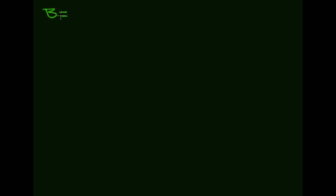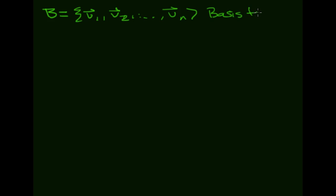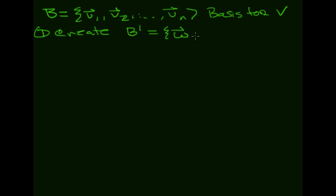In Gram-Schmidt, we're going to start off with some basis — just V1, V2, out to Vn — and this is just a basis for some vector space V. What we're going to do is create a new basis B prime, which is W1, W2, out to Wn, and this is going to be orthogonal.